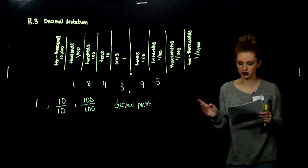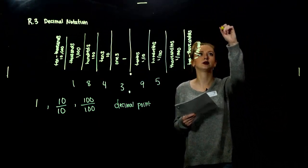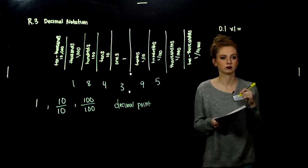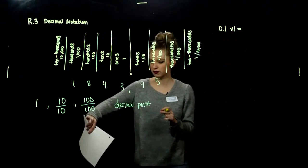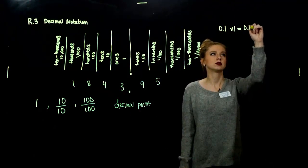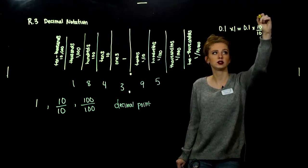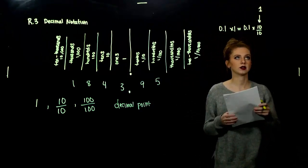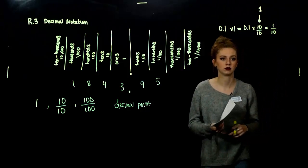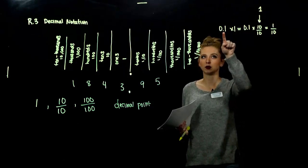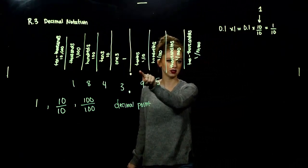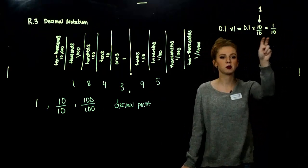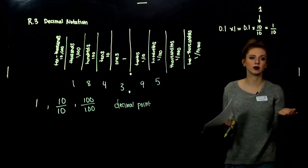Let's look at a few examples. If I take point one, I can multiply it by one — and I can rewrite that one as ten over ten. I'm still just multiplying by one, but changing the form. Multiply straight across the top and straight across the bottom: I get one over ten. So looking at the decimal, I've got a one in the tenths place, and as a fraction that's one tenth of a whole number. These two are equivalent, but we want to have the option to use one form or another.